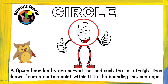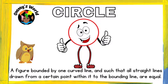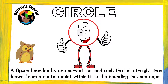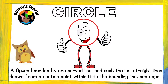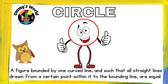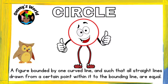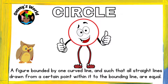Our next shape is a circle. A circle is a figure bounded by one curved line such that all straight lines drawn from a certain point within it to the bounding line are equal. There is no opening and everything is closed.